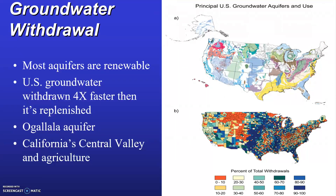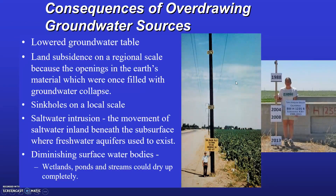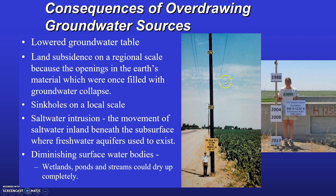When you pull more groundwater from the subsurface than what can be recharged, the result is a lowered groundwater table. A ripple effect is that as the groundwater table goes deeper, land subsidence can occur on a regional scale because openings in the subsurface that were once filled with groundwater collapse. You can also get sinkholes, saltwater intrusion, and smaller surface water bodies. The photograph illustrates subsidence in San Joaquin Valley, California, where from 1925 to 1977 land subsidence ranged from one foot to 28 feet, and is currently occurring at about one foot per year in some California regions. Phoenix, Arizona is also experiencing land subsidence issues.